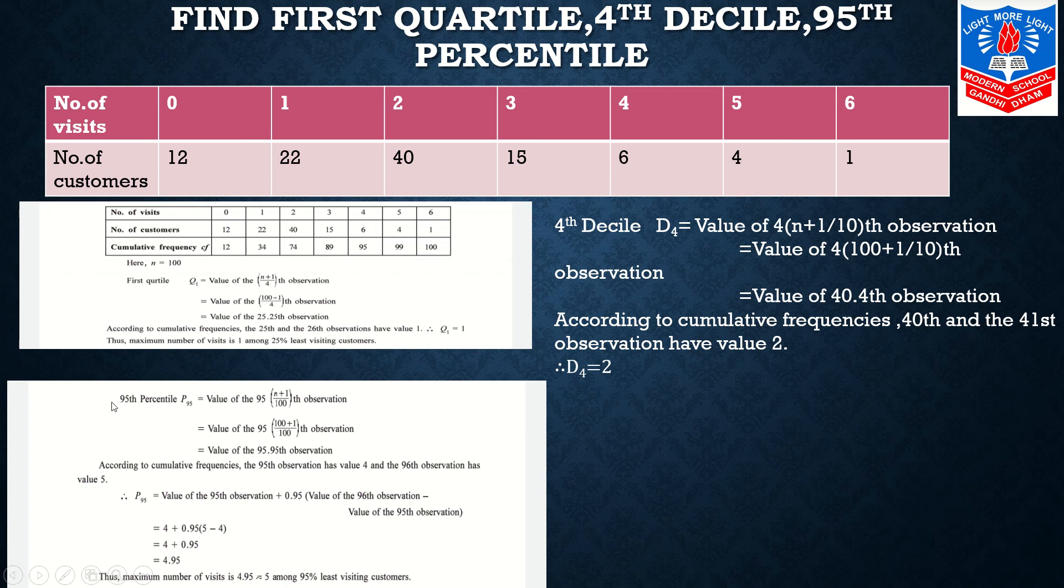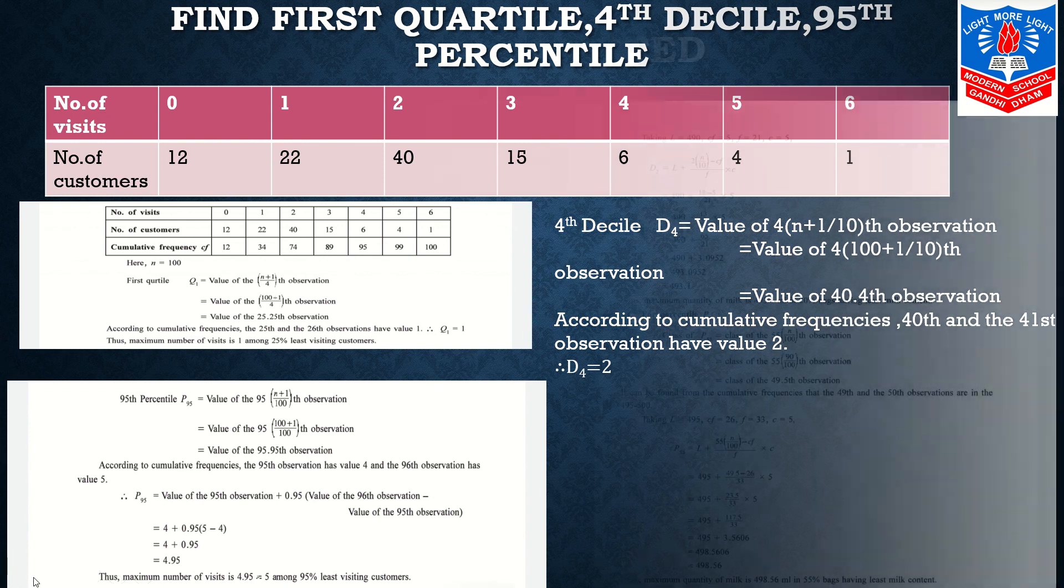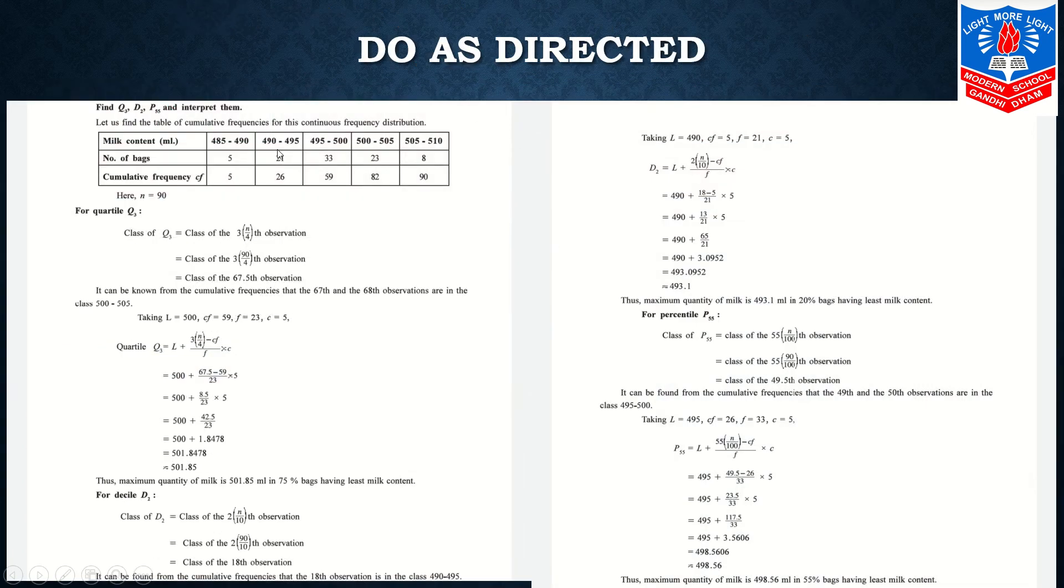Students, I hope I am clear to you till this topic. Now we move on to continuous frequency distribution sums. Over here you are asked to find out Q3, D2, and P55. First two columns - milk content in milliliter and number of bags - are part of the question itself. Next is CFI you will calculate by yourself.